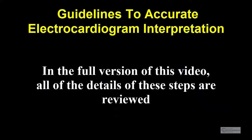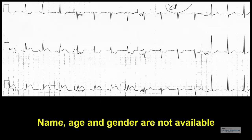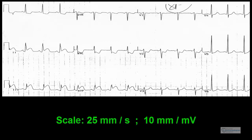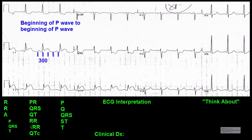During the full version, all of the details of these steps are reviewed. Now I will apply these steps to reading this electrocardiogram. The name, age, and gender are not available. The scale, as indicated by these boxes on the left, reflects a normal scale of 25 millimeters per second and 10 millimeters per millivolt. Using the 300, 150, 100, 75 method, the rate is between 75 and 100 beats per minute — we will say about 85 beats per minute.